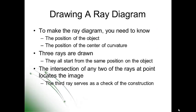When we try to locate an image, it's important to draw a ray diagram. To draw a ray diagram for a curved mirror, you need to know the position of the object and also the position of the center of curvature. We're going to draw three different rays and they're all going to start from the same position on the object. Where any two rays intersect, that's going to locate our image. The third ray just serves as a check for the construction of our other two rays.